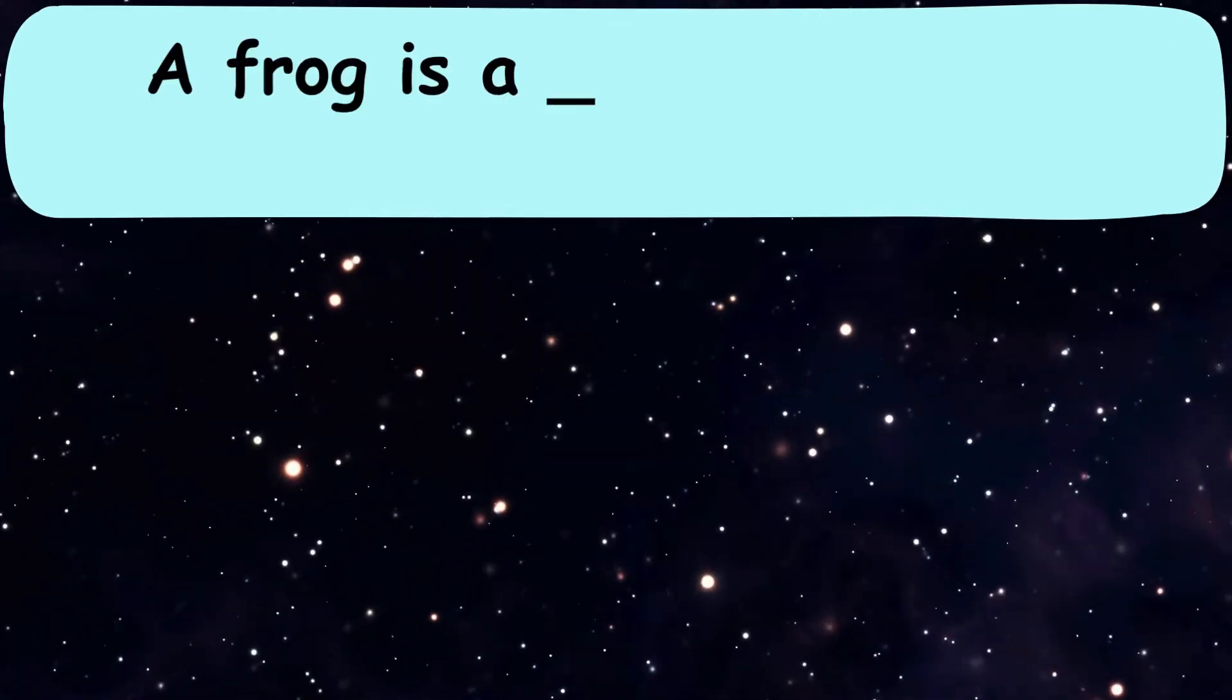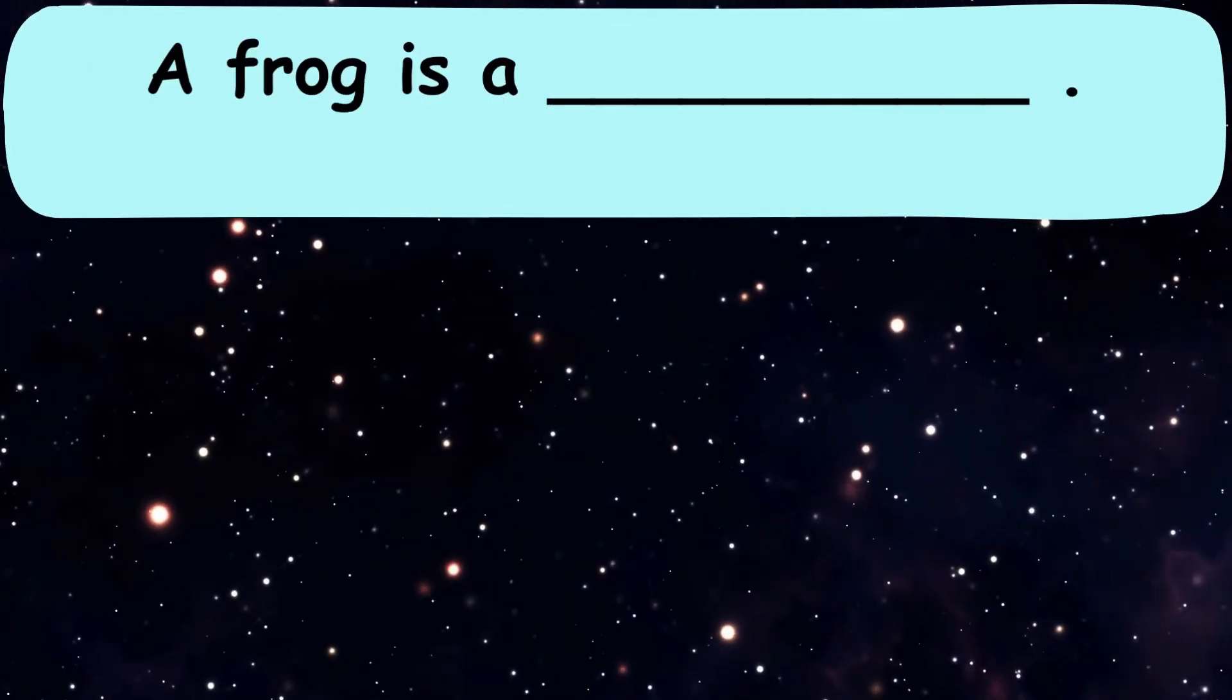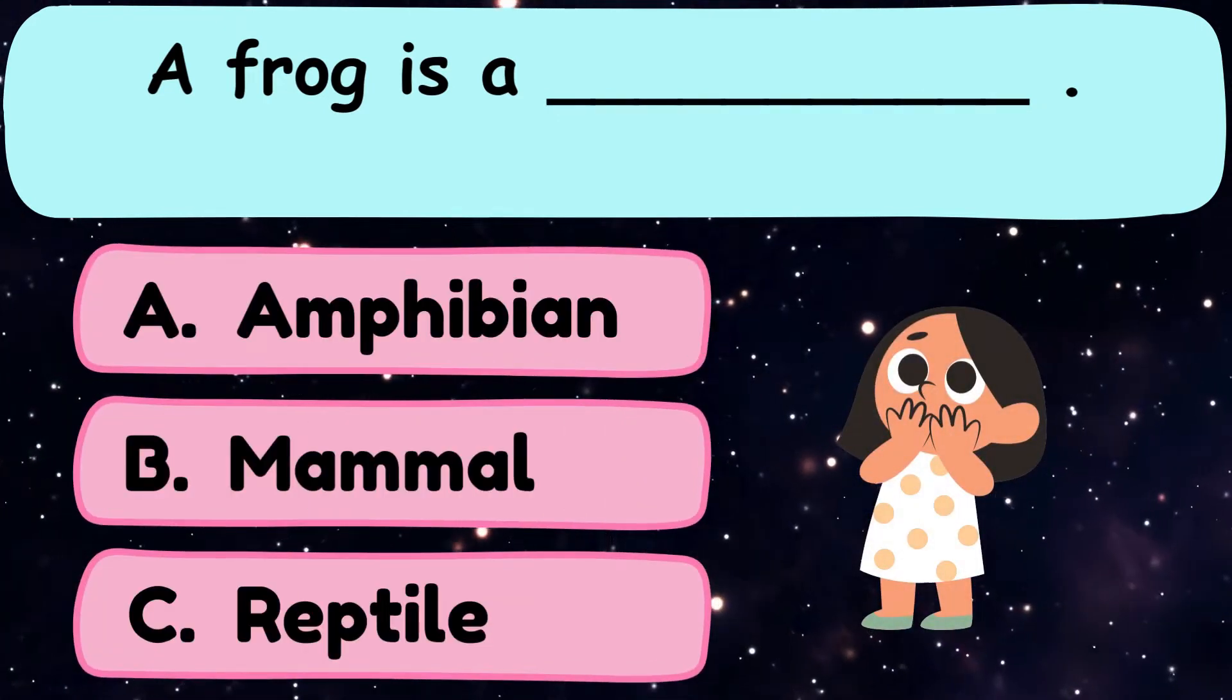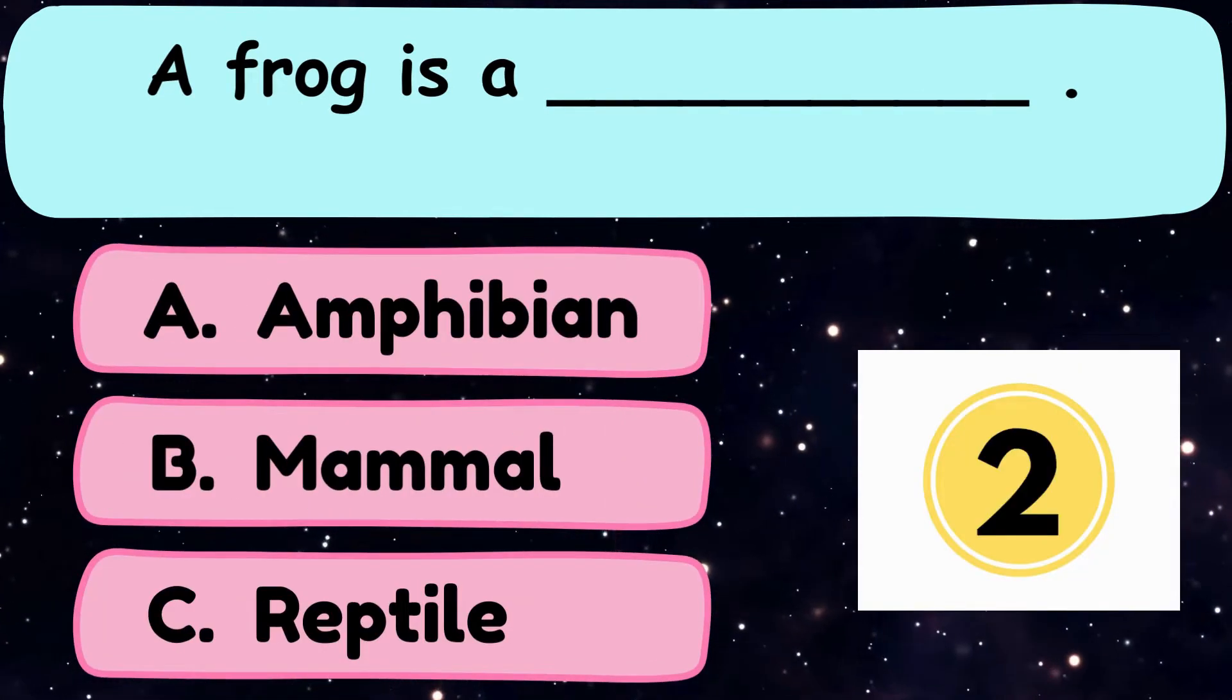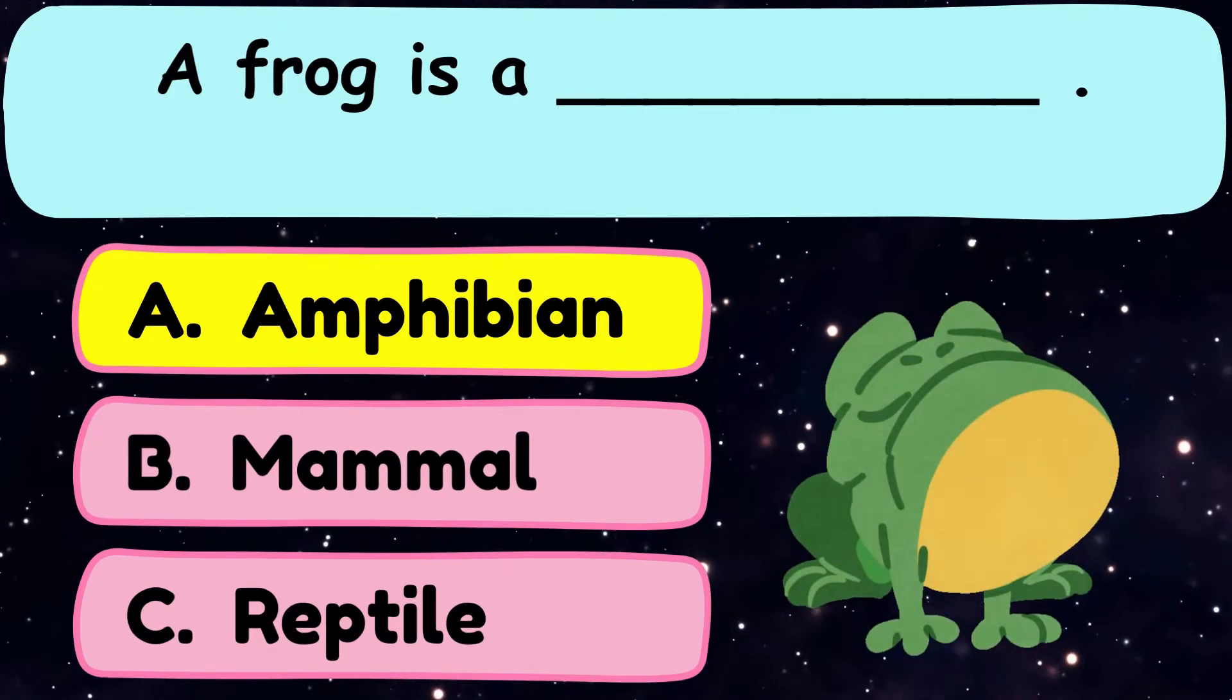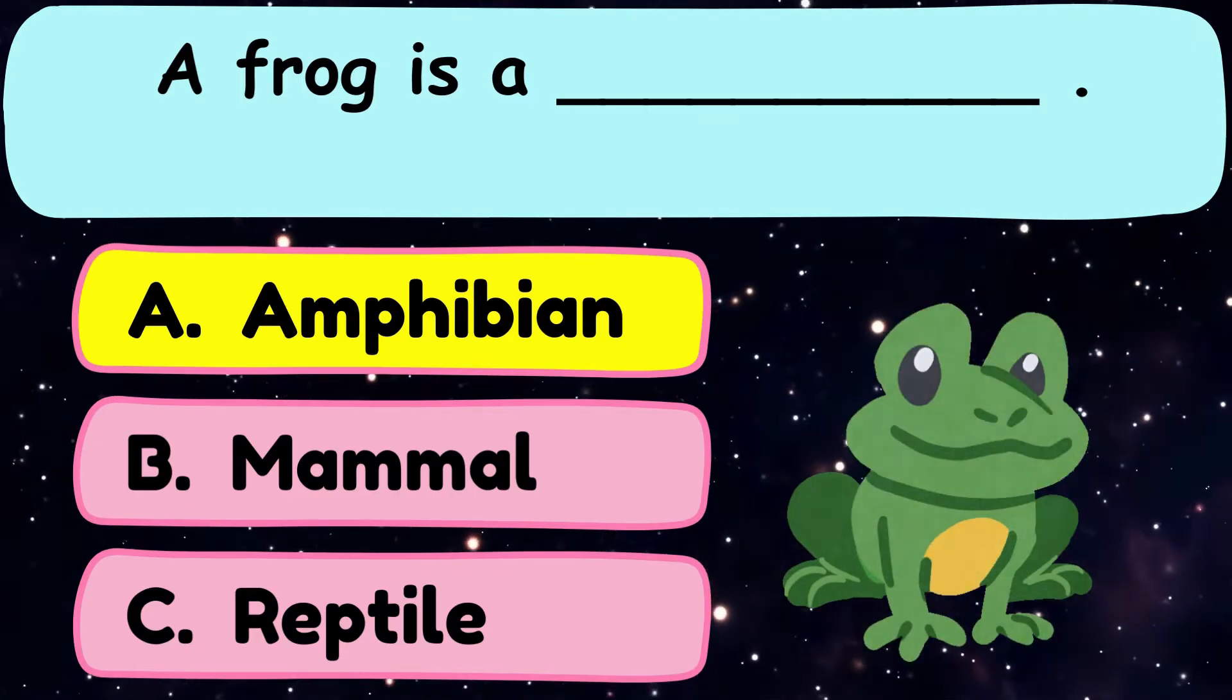Question number 13. A frog is a dash. A. Amphibian, B. Mammal, or C. Reptile? And the correct answer is frog is an amphibian. Option A is the correct answer.